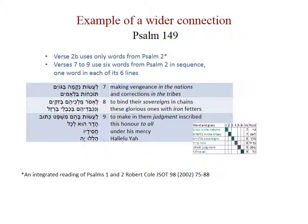Here is a pattern that shows across two psalms. There are, in fact, several patterns that tie consecutive psalms together, but this one is a wide structure between Psalm 2 and 149. Both of these patterns look deliberate. Verses 2b of Psalm 149 uses only words from Psalm 2. Verses 7 to 9 use six words from Psalm 2 in sequence, one word in each of its six lines. When Psalm 2 and 149 are compared in the database, the resulting intertextual allusion is quite clear, as the table shows.